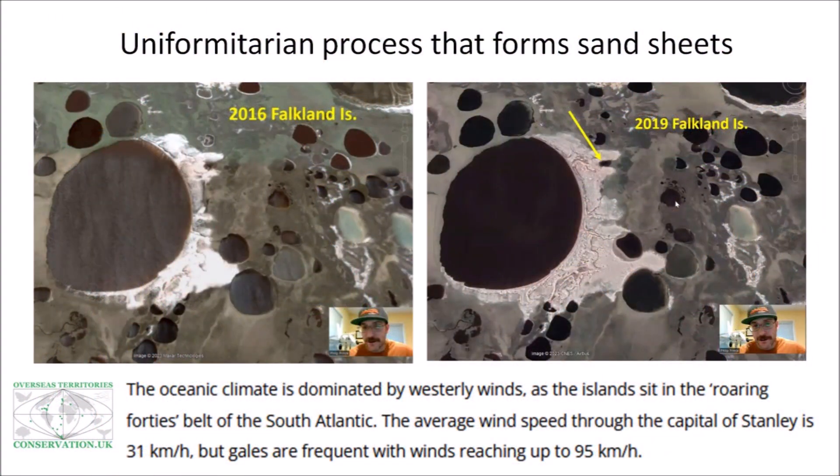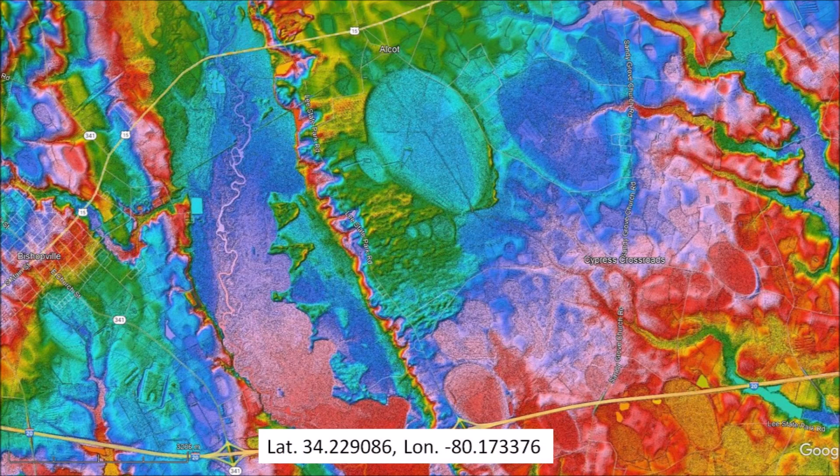Philip describes the uniformitarian process that forms the sand sheets in the Falkland Islands, and we can see that this process can take many years. According to the UK Overseas Territories Conservation Forum, the oceanic climate of the Falkland Islands is dominated by westerly winds as the islands sit on the roaring forties belt of the southern Atlantic. The average wind speed through the capital of Stanley is 31 km per hour, but gales are frequent with winds reaching up to 95 km per hour. It is easy to conclude that the extensive sand sheets and dunes associated with the Carolina Bays could have taken a long time to form.